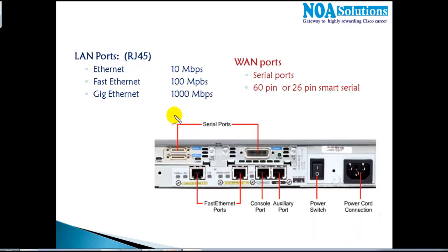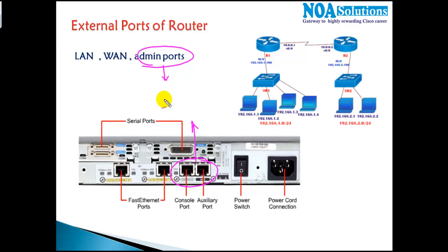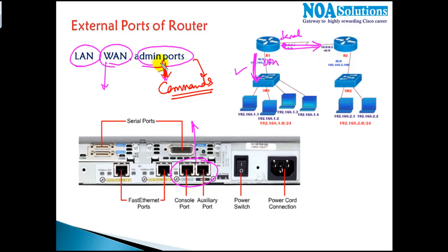The third category of ports is administrative ports. You can see two ports here: console and auxiliary, both under the administrative ports category. The LAN port forwards your traffic to the LAN, the WAN port connects to the WAN via serial or Ethernet. But administrative ports don't actually carry any traffic or data — they carry commands or whatever you type to configure or administer the router.